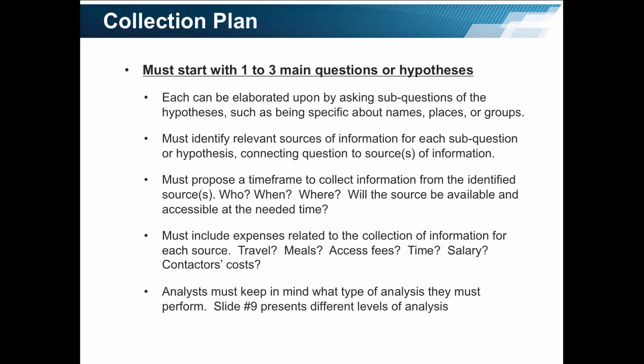The plan must propose the time frame to collect information from the identified source or sources: who, when, or where. Will the source be available and accessible at the needed time? This is important when using human sources for confirmation of findings. Must include expenses related to the collection of information for each source, such as travel, meals, access fees, time, salary, and contractor's costs. Be aware of access fees, because in some cases the fees paid invalidate the findings.